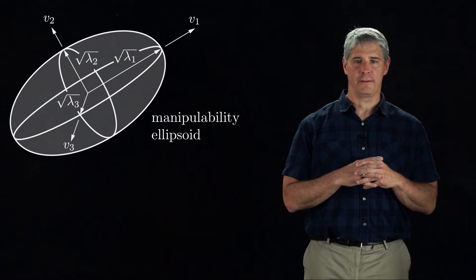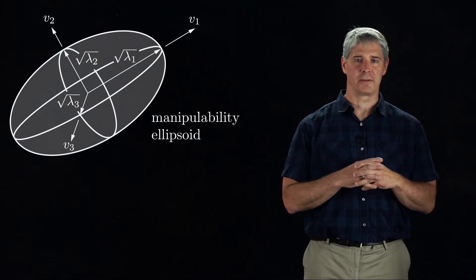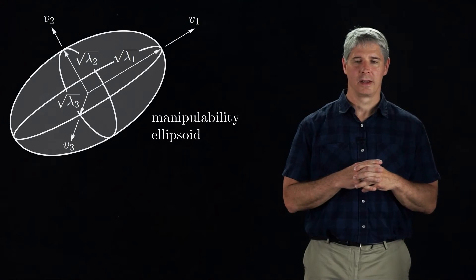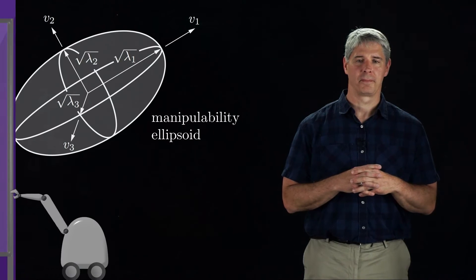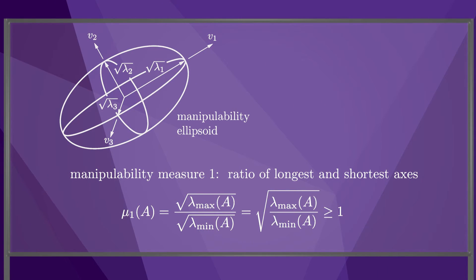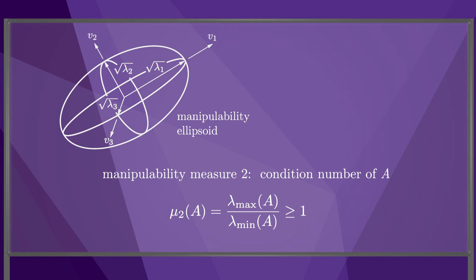Now that we can visualize the end effector motion capabilities as a manipulability ellipsoid, we can assign a single number representing how close the robot is to being singular. These numbers are called manipulability measures. The first manipulability measure is the ratio of the longest axis to the shortest axis of the ellipsoid. This measure is lower bounded by 1, and if it is equal to 1, we say that the manipulability ellipsoid is isotropic — it is equally easy to move in any direction. On the other hand, as the robot approaches a singularity, this number grows large. The second measure is just the square of the first measure, often called the condition number of the matrix A.